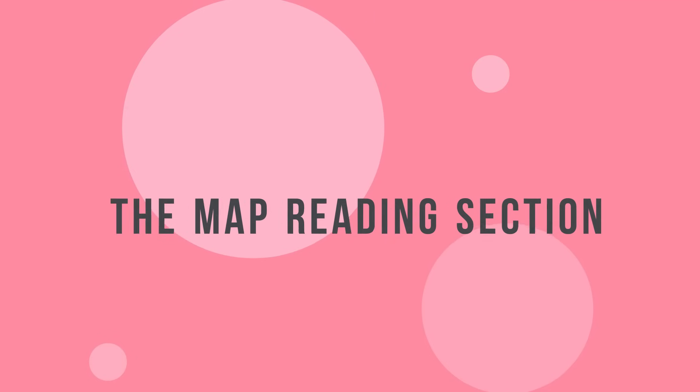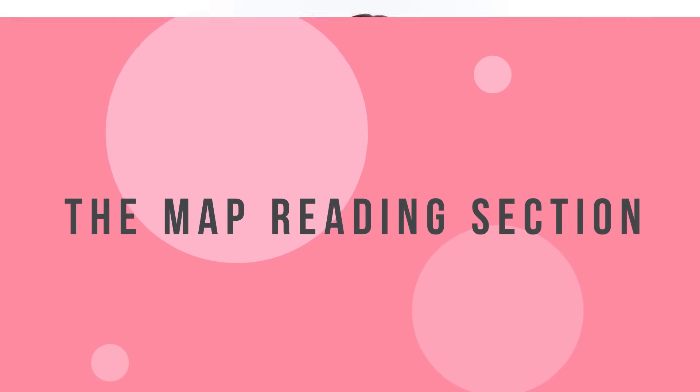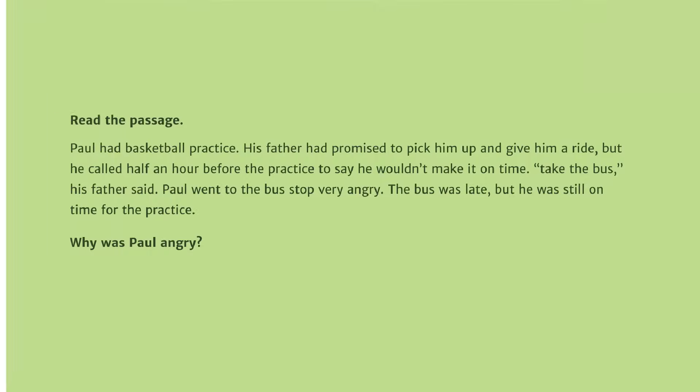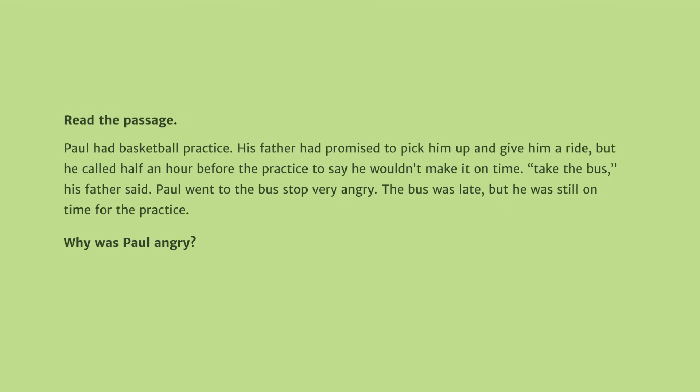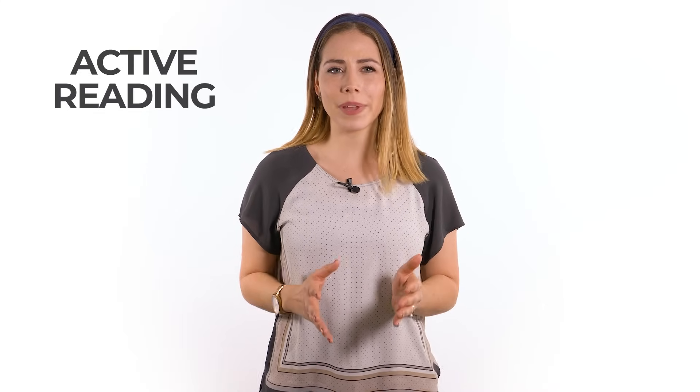The last part of the MAP test we're going to cover in this video is the MAP reading section. The reading section measures one's knowledge of different types of writing forms and ability to analyze paragraphs to correctly draw on main ideas, concepts, and themes. To improve your child's reading RIT scores, we recommend helping them become an active reader. Actively reading means keeping yourself focused on the main goals of the text and searching for the main purpose of each paragraph. This skill is absolutely vital for reading comprehension questions.